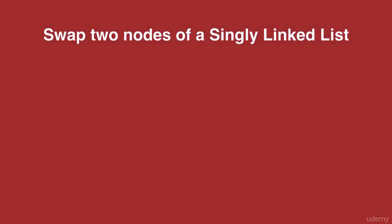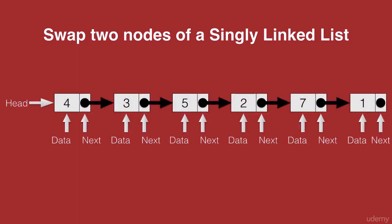Hello and welcome to this lecture. In this lecture, you will learn how to swap two nodes of a singly linked list. Let's take an example of a singly linked list. We have a list with six nodes and we are trying to swap two nodes: the node with the data 3 and the node with the data 7.